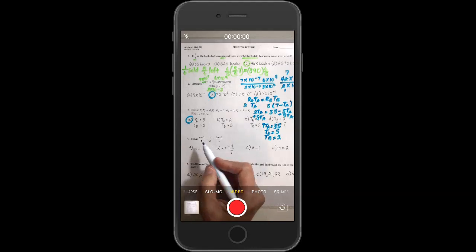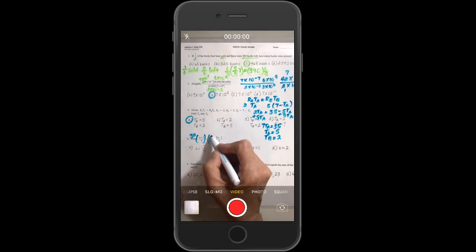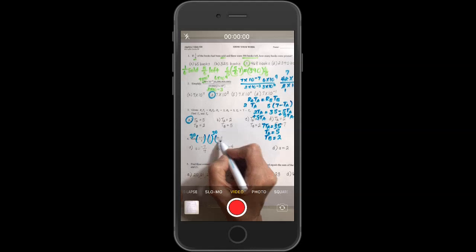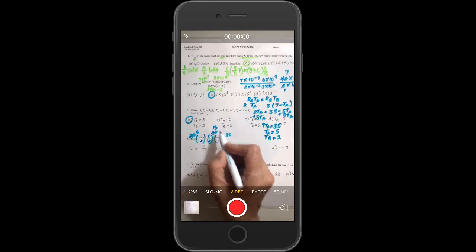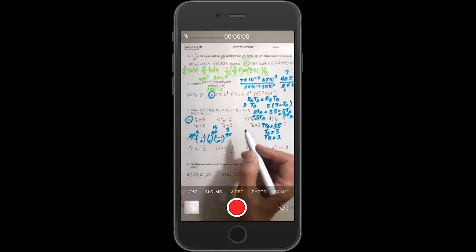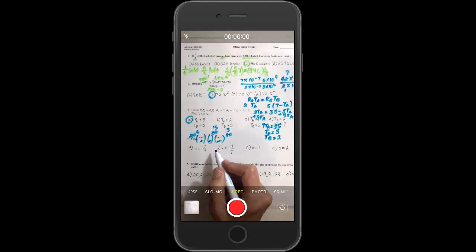On number four, we should multiply by the least common multiple that five, two, and six will go into, and that is thirty. So we multiply each one by thirty. And that cancels and gives us six, this cancels and gives us fifteen, and this cancels and gives us five. And then we need to do distributive property.